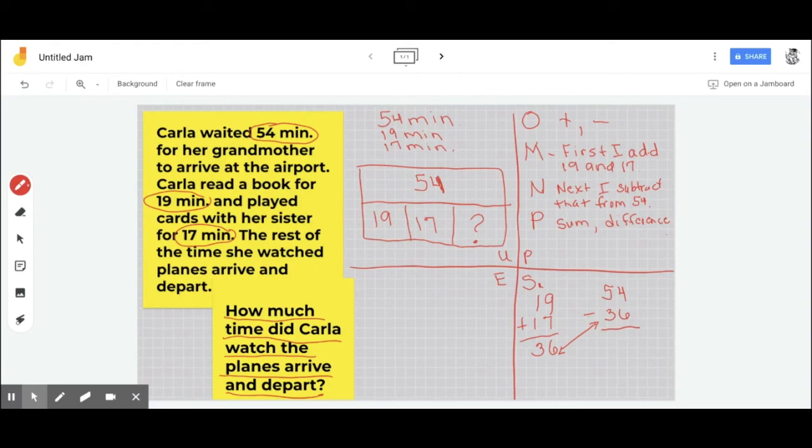So 4 take away 6. Can I do that? No, I cannot because 6 is bigger than 4. So I'm going to regroup and I'm going to make this 4 into 14, and that leaves me 4 tens.